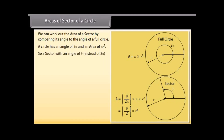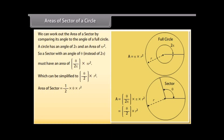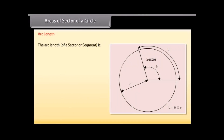A circle has an angle of 2π and an area of πR². So a sector with an angle of theta instead of 2π must have an area of (theta / 2π) × πR², which simplifies to (theta / 2) × R². Area of sector equals (1/2) × theta × R² when theta is in radians. Area of sector equals (1/2) × theta × (π/180) × R² when theta is in degrees. By the same reasoning, arc length L equals theta × R when theta is in radians, and L equals theta × (π/180) × R when theta is in degrees.